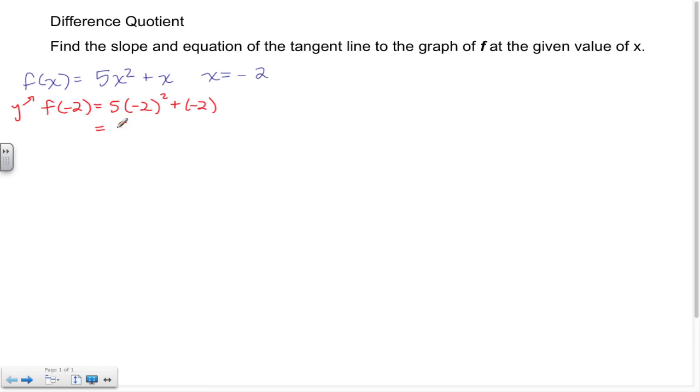Exponents first, so this becomes 5 times 4 because negative 2 squared is 4, and a positive times a negative makes that a negative 2. So here I have 20 minus 2, which says I have a value of 18. So my point of tangency is negative 2, 18.